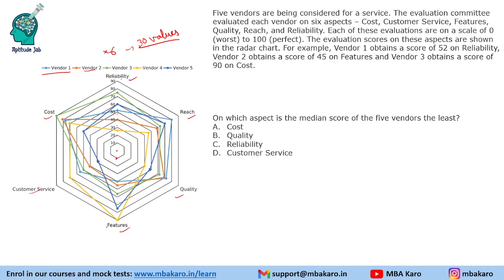The first question is: on which aspect is the median score of the five vendors the least? The median score — since there are five vendors — is the third highest or third lowest value. So we need to locate the third point on each aspect.